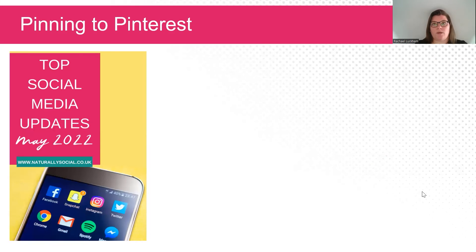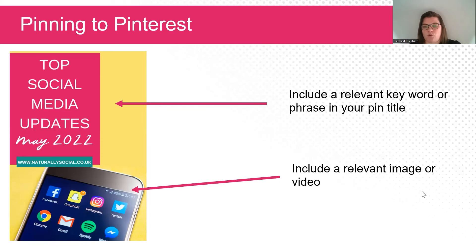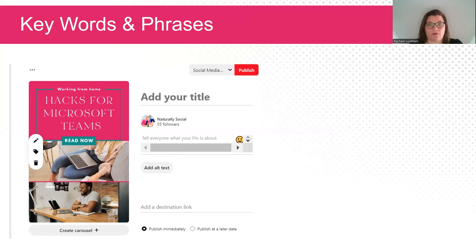So when it comes to pinning to Pinterest, a lot of people think it's quite complicated, but if you think about it from an SEO point of view, it can be relatively straightforward. When you are creating a pin, make sure to include a relevant keyword phrase in your pin title. The keyword phrase on this pin here is social media updates. You also need to make sure that you're including a relevant image or video — the algorithm for Pinterest is aware of the images you're including. For example, if you're saying you have a recipe for an apple pie but your image is of shoes or handbags, it's not going to know where to categorize your pin. So it's important that the picture and the keyword phrase are relevant to each other. Make sure to think about SEO when you're posting to Pinterest.